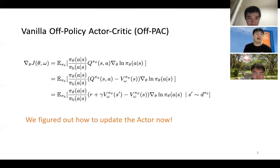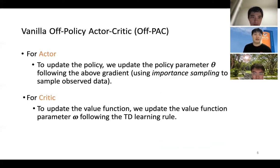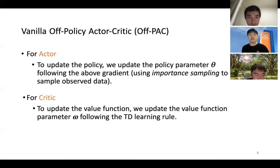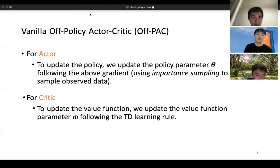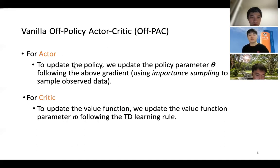So we just figure out how to update the actor now. For the actor, we update the policy by updating the policy parameter theta following the above gradient. We use importance sampling to sample observed data. For the critic, we update the state value function parameter omega following the basic TD learning rule.